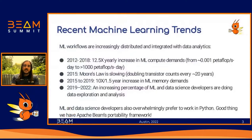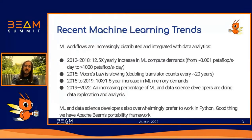The first important trend we've observed is an over 10x yearly increase in the compute demands required to train ML models, resulting in needing 1 million times more compute power to train ML models in 2018 than in 2012. From 2015 to 2019, we also observed a 10x increase in ML memory demands every year and a half. These growth rates outpace Moore's Law at its peak, and vastly outpace Moore's Law today since we're now looking at doubling transistor counts about once every 20 years.